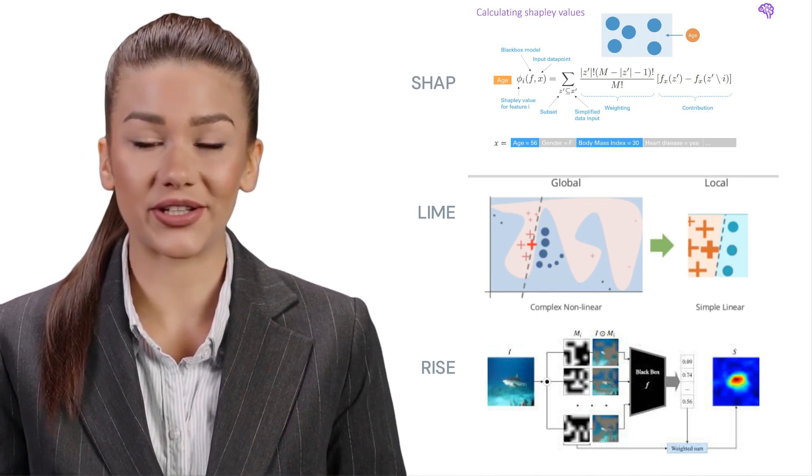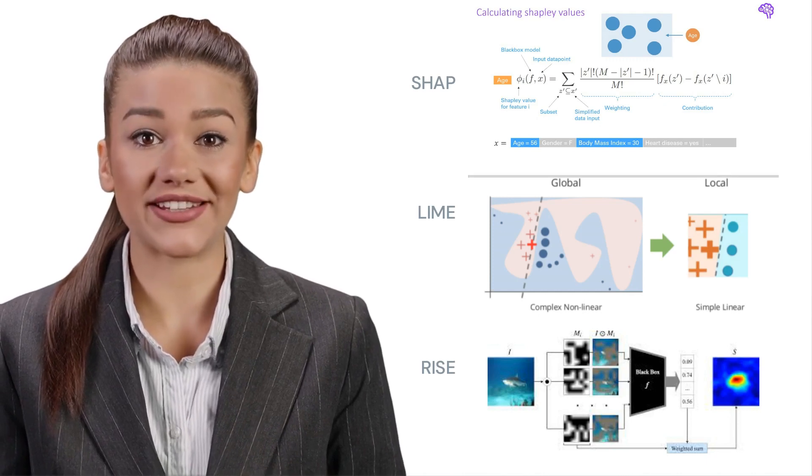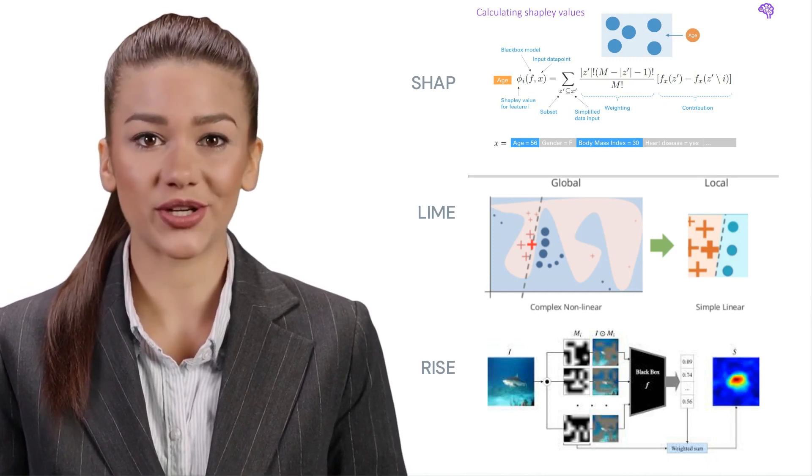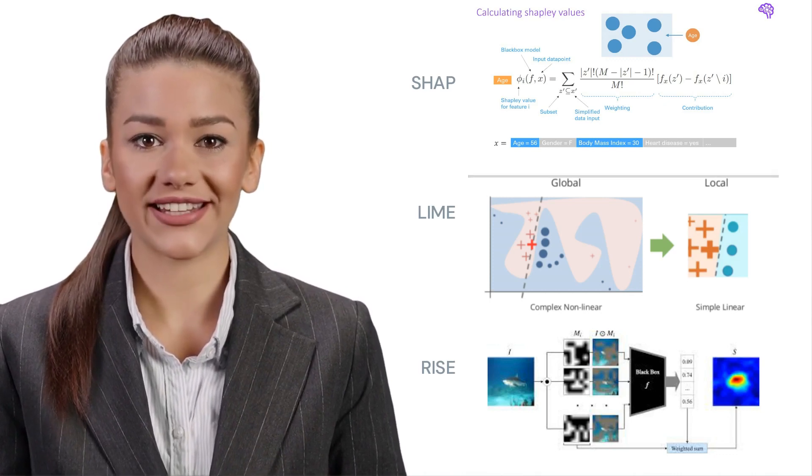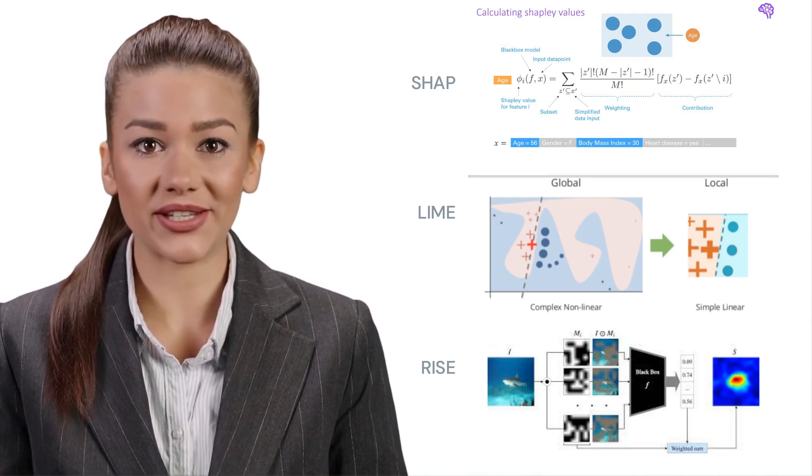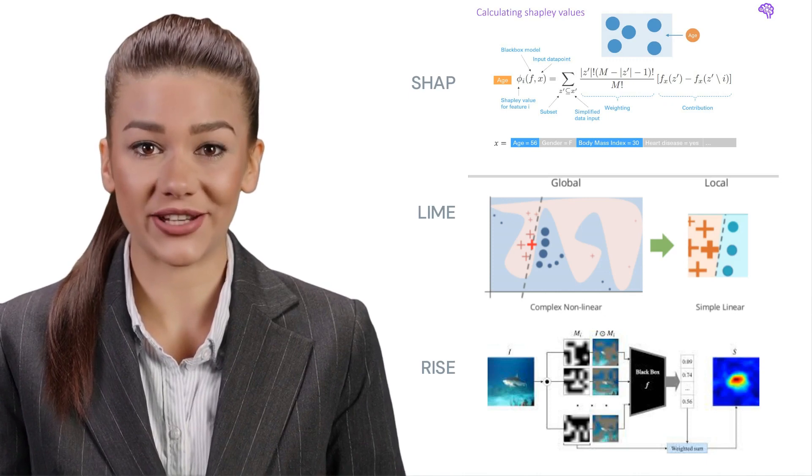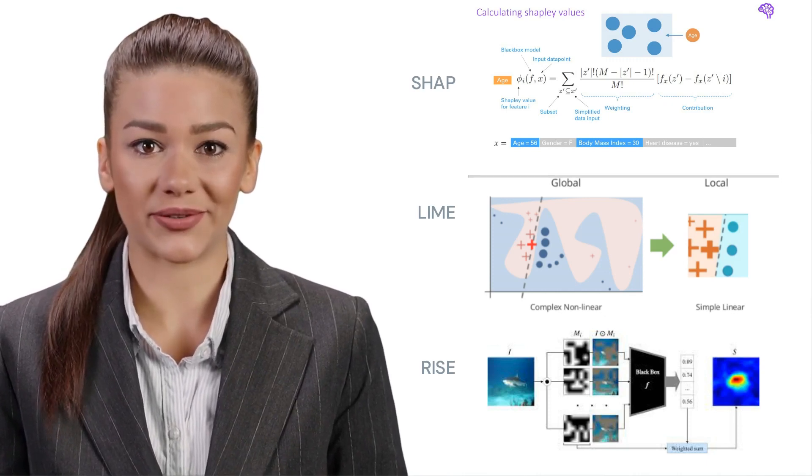In order to more accurately explain the model and have more methods to rely on, feature altering for explanations of black box models, FAB, was created. This algorithm was inspired by RISE, a metric that was previously used in image classification problems.